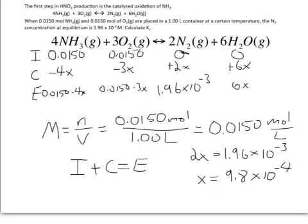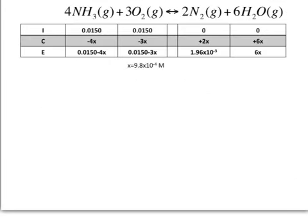To solve for x, I divide both sides by 2 and I get that x is equal to 9.8 times 10 to the minus 4. So let me get some more room. I just have the same ICE table that we filled out before, just typed a little bit more neatly.